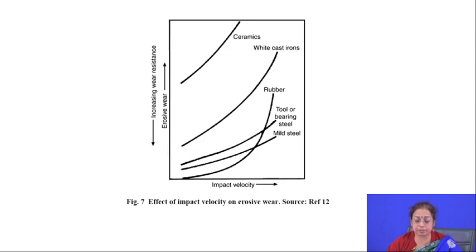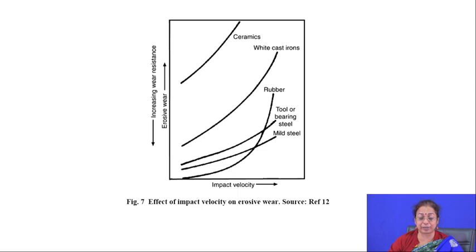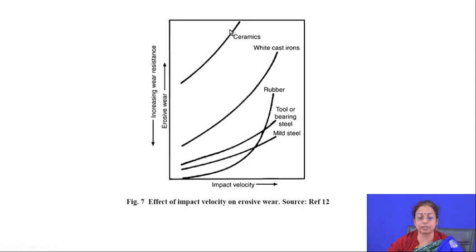The different parameters that influence erosion phenomena are: temperature of the media, velocity of the media, mass of the particles present in the media, and the chemical reactivity of the media — whether it is chemically reactive or non-reactive. These four parameters determine the rate of any kind of erosive wear or corrosion. As impact velocity increases, the erosive wear also increases. Regarding material behavior, ceramic particles have the highest erosive wear rate compared to steel or tool steel, while rubber has the lowest erosion rate.